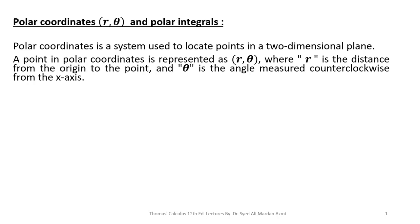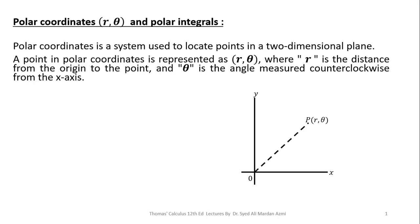A polar coordinate system is used to locate a point in a two-dimensional plane. A polar coordinate point is represented by R and theta, where R is the distance of the point from the origin, and theta is the angle measured in the counterclockwise direction. So if P is a point here, then R is the distance of this point from the origin, and theta is the angle measured in the counterclockwise direction.